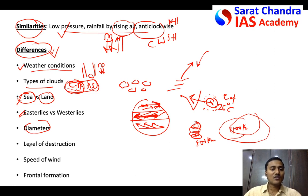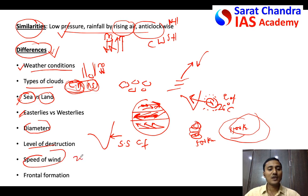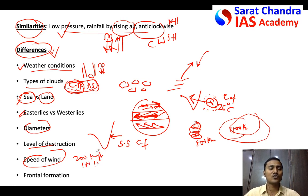Sixth difference: level of destruction. In tropical cyclones as they approach land there are huge storm surges, coastal flooding, and very high wind speeds — almost 200 km/h, sometimes up to 400 km/h. In temperate cyclones, wind speed is maximum 100–120 km/h, so the destruction is much less compared to tropical cyclones.